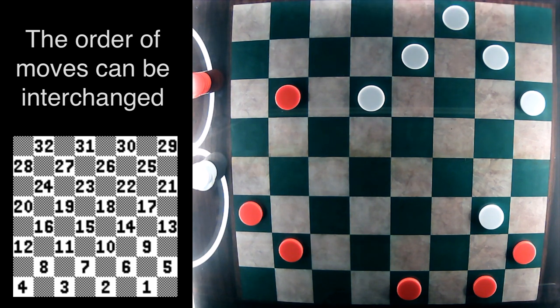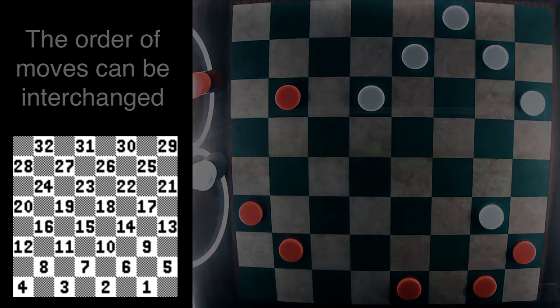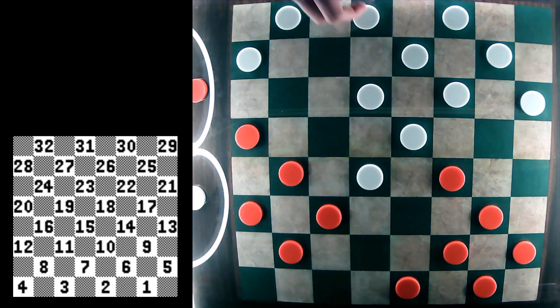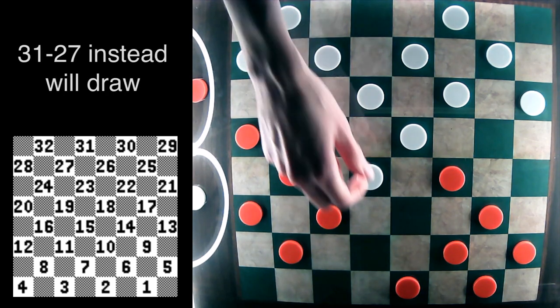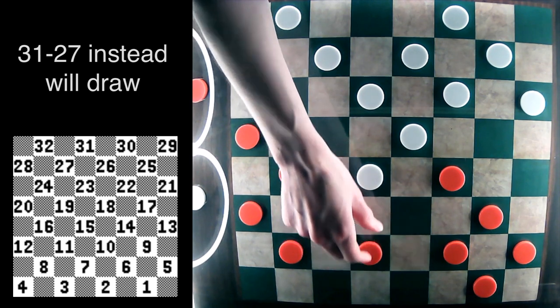But let's go back instead of that 22-17 move being played. So we now know 22-17 will lose. So what does white play next? Well, 31-27 is best. And now red can start developing to 7.